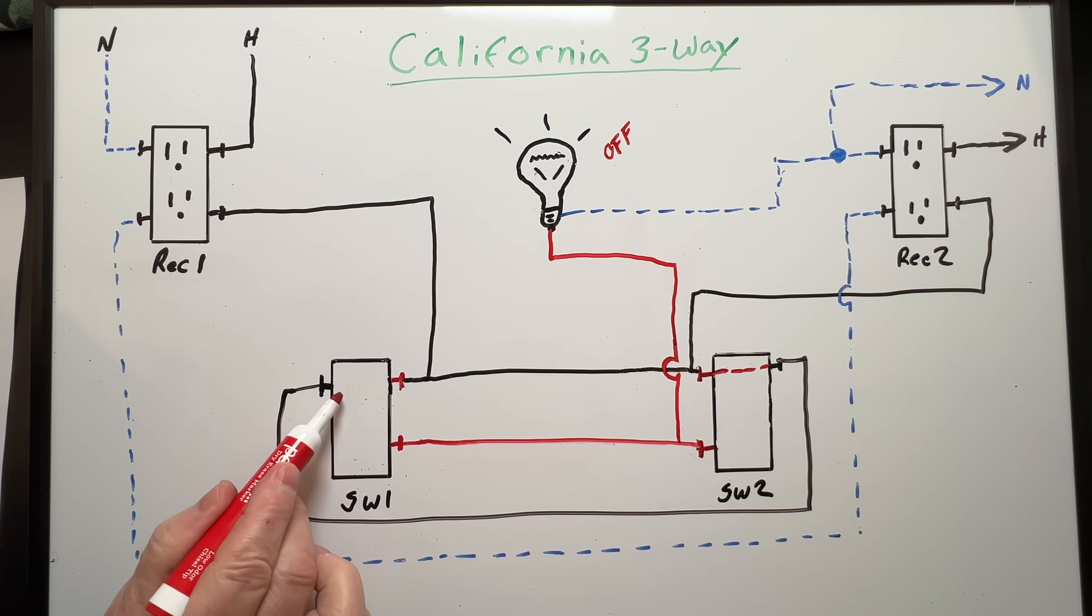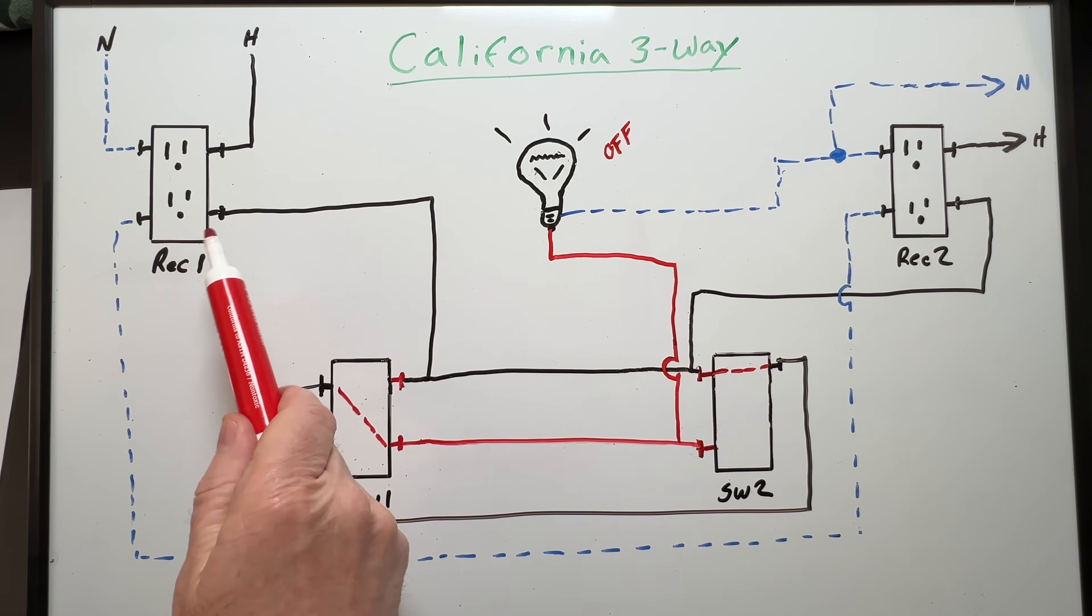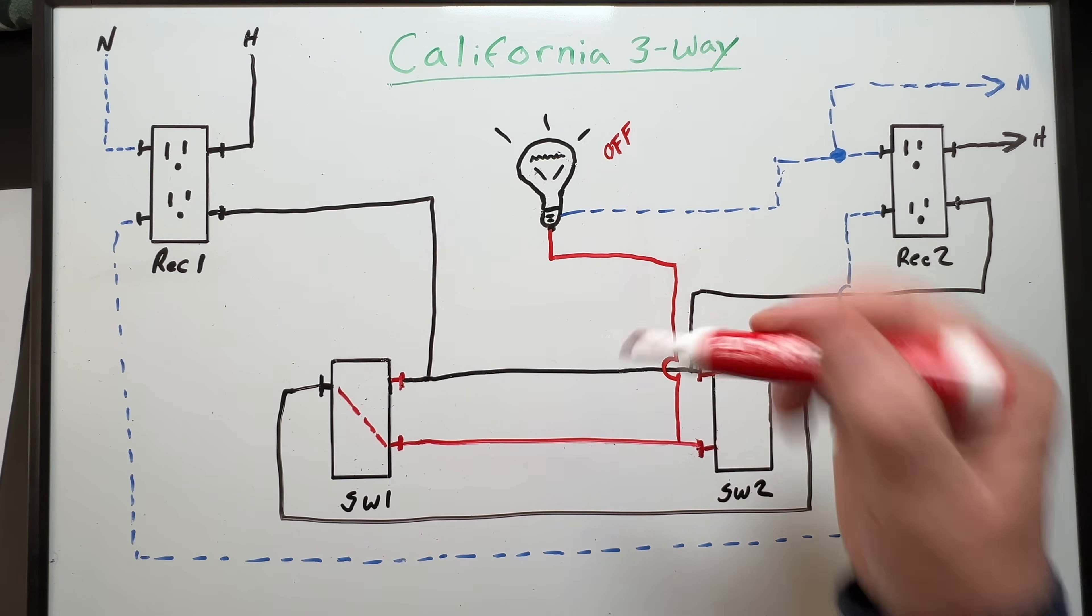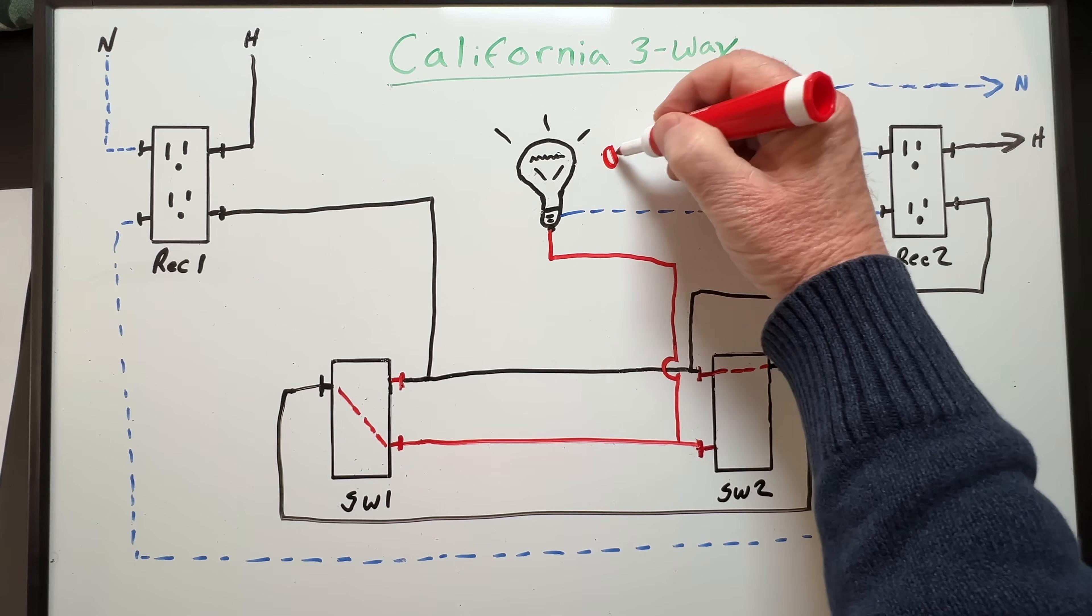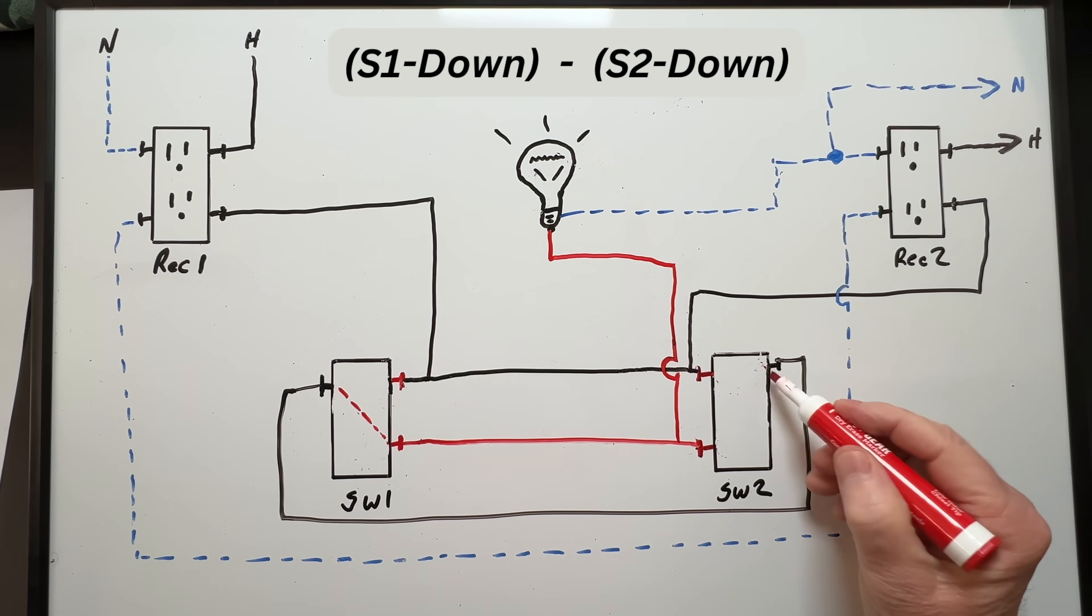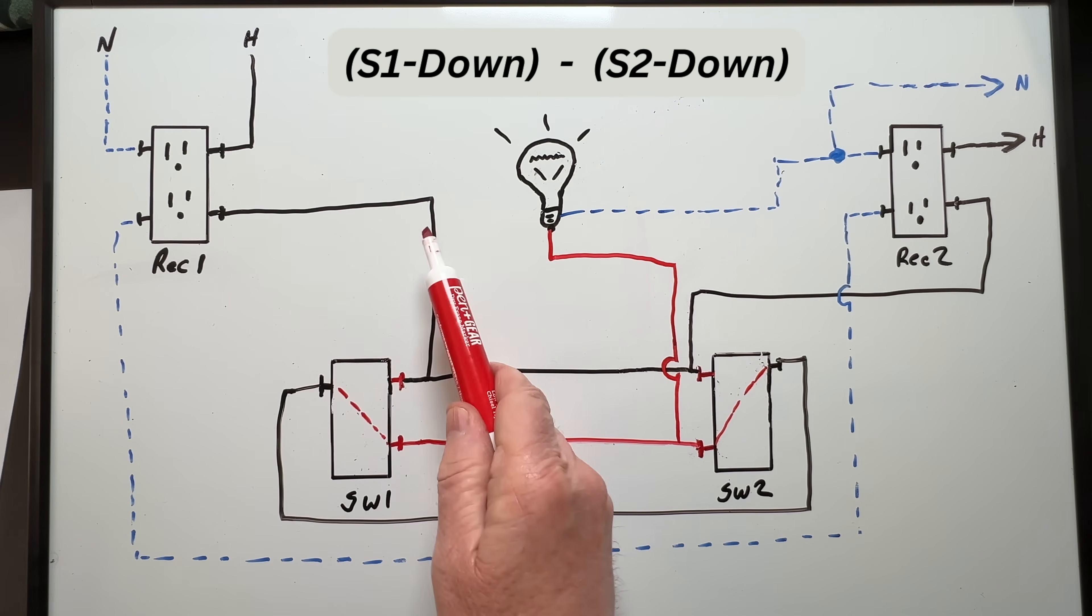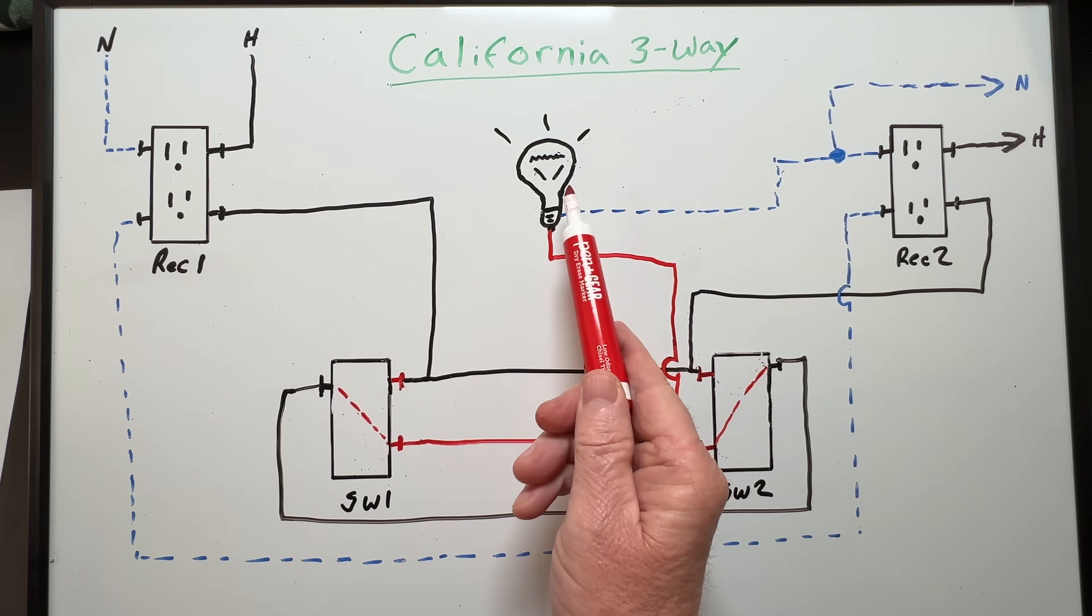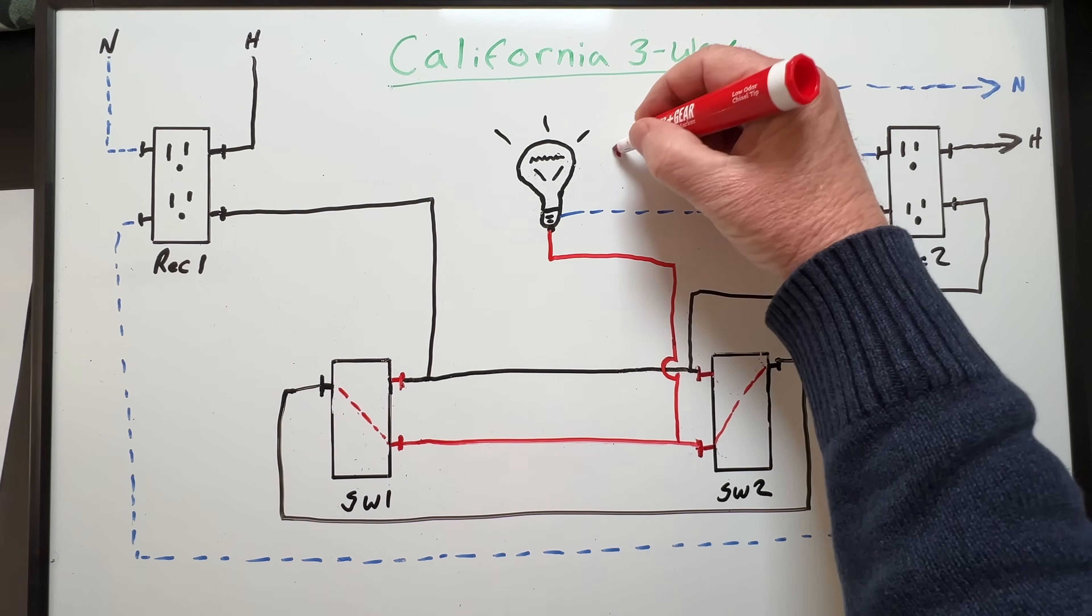Now let's move switch one to the down position. This time our power comes down from our receptacle to switch one goes across to switch two through switch two across our black wire to common on switch one across switch one over and then up to our light. The neutral returns the current again so now our light will be back on. Now let's move switch two to the down position. This time our power comes from receptacle one down to switch one can't get across switch one goes across to switch two can't get across switch two so there is no path to our light. So again our light will be off.